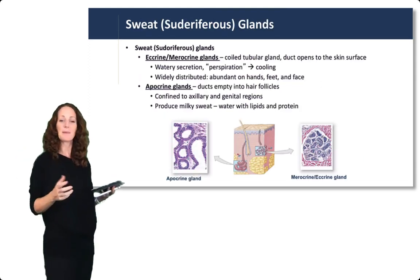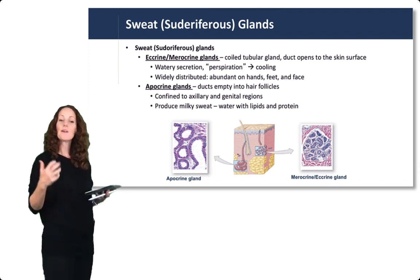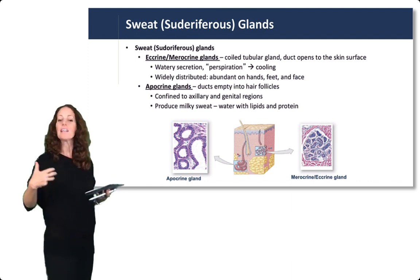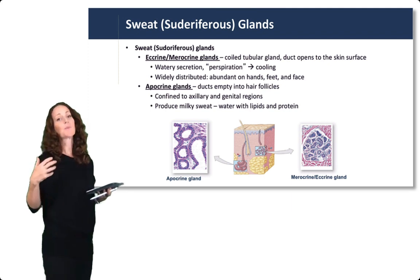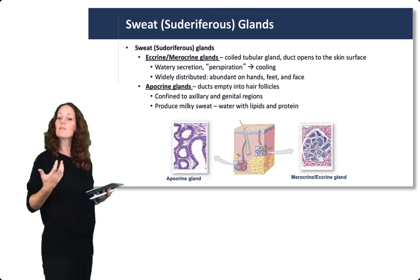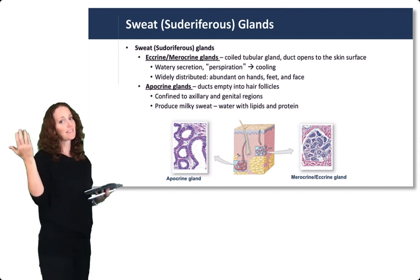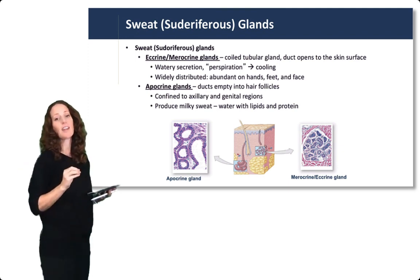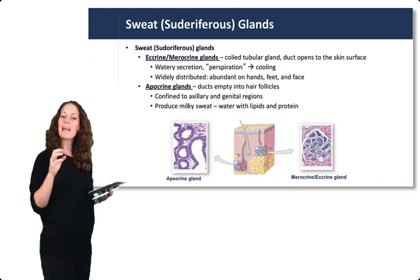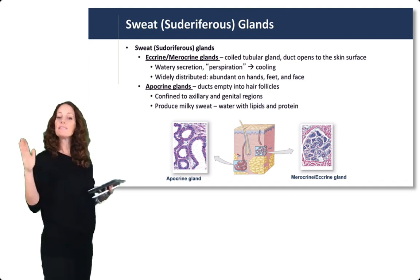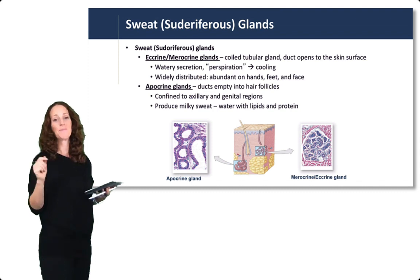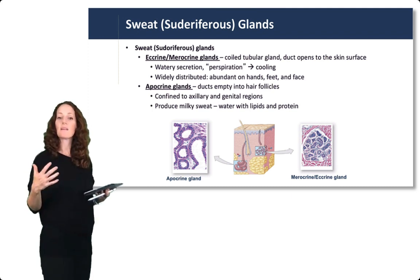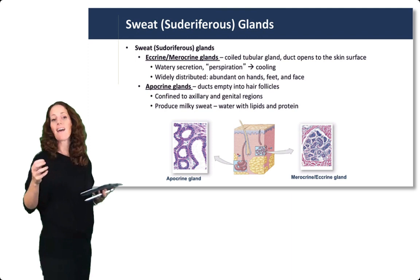Sudoriferous glands are the other main type of gland found within the skin. There are two types. Eccrine or merocrine glands are what we would normally call sweat glands. They have a coiled duct which opens to the skin surface — that's different from other glands which generally attach to hair follicles. So for eccrine and merocrine glands, look for a separate duct away from the hair follicle. They have a watery secretion which is cooling to the body, and are widely distributed, abundant on the hands, feet, and face.